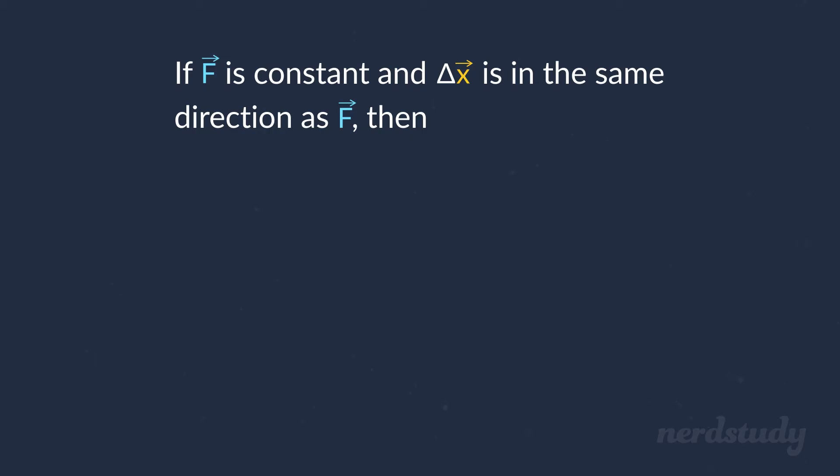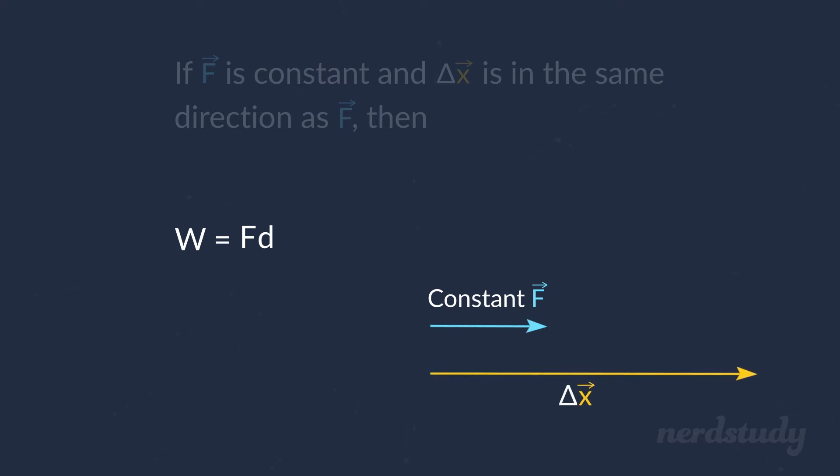If an object is subject to a constant force, which causes the object to be displaced in the same direction as the force, then the work done by the force is the magnitude of the force times the magnitude of the displacement. Now, we've written this formula with the double bars that indicate the magnitude of a vector. But many physicists simplify this equation and write it simply as W equals F multiplied by D. F, without an arrow, represents only the magnitude of the force. And D stands for the magnitude of the displacement, in other words, the distance. So there we have it! If the force is constant and is pointing in the same direction as the displacement, then the work done by the force is the magnitude of the force times distance.